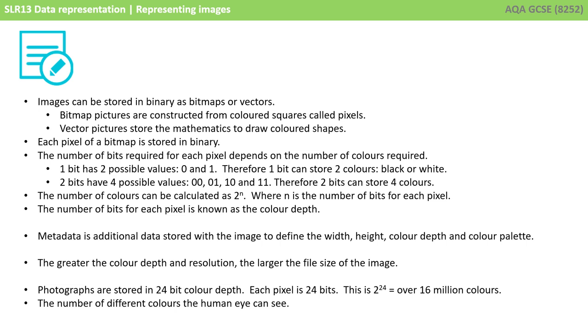Each pixel of a bitmap is stored in binary. The number of bits required for each pixel depends on the number of colours required. One bit has two possible values, 0 and 1, therefore one bit can store just two colours, e.g. black or white.